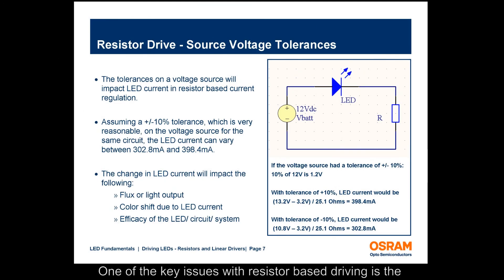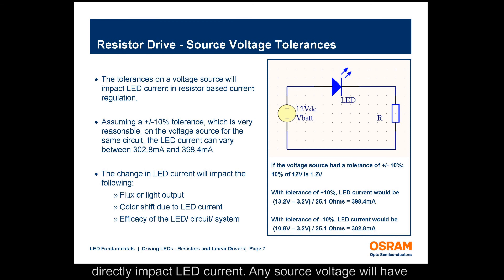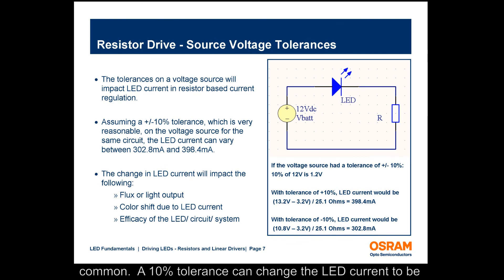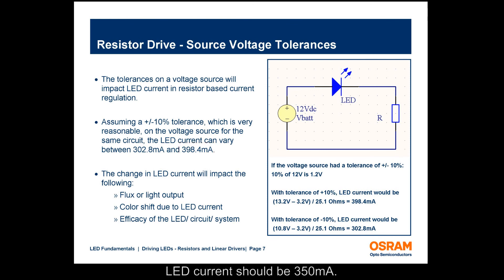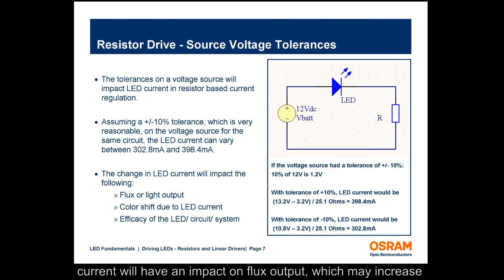One of the key issues with resistor-based driving is the variation in source voltage. Changes in source voltage will directly impact LED current. Any source voltage will have some tolerances, and having a plus or minus 10% tolerance is very common. A 10% tolerance can change the LED current to be between 300 and 400 milliamps, where the actual calculated LED current should be 350 milliamps. Any change in LED current is not desired, as a change in LED current will have an impact on flux output, which may increase or decrease total light output of a system.